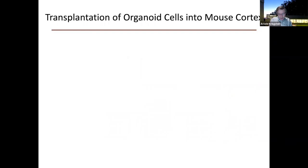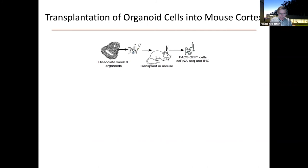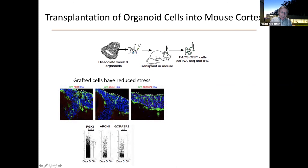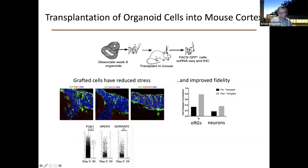We were interested in how the stress might be modulated. We labeled organoid cells, which had stressed cells, and injected them into an in vivo mouse brain. After about a month, we FACS-sorted them and performed single-cell RNA sequencing. To our surprise, the grafted cells had eliminated their stress — the stress genes that were very high initially had essentially normalized over a month. The fidelity of the cells also improved, with crisper gene expression for ORGs and excitatory neurons. We think the reduced stress and improved fidelity are related.